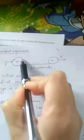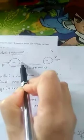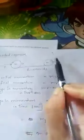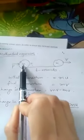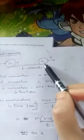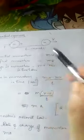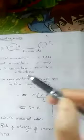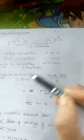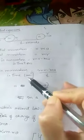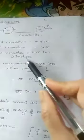Let us look into the mathematical expression to understand this better. If I have a body of mass M with initial velocity U, and I apply a force F on it, after time t seconds the velocity achieved is V. Initial momentum will be M into U, and final momentum will be M into V. Change in momentum will be final momentum minus initial momentum, that is MV minus MU. This change in momentum occurs in t seconds, so the rate of change of momentum is MV minus MU divided by t.